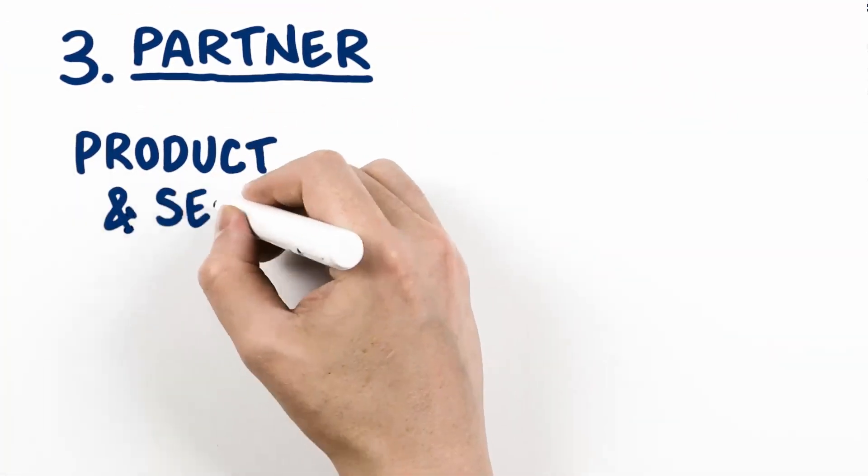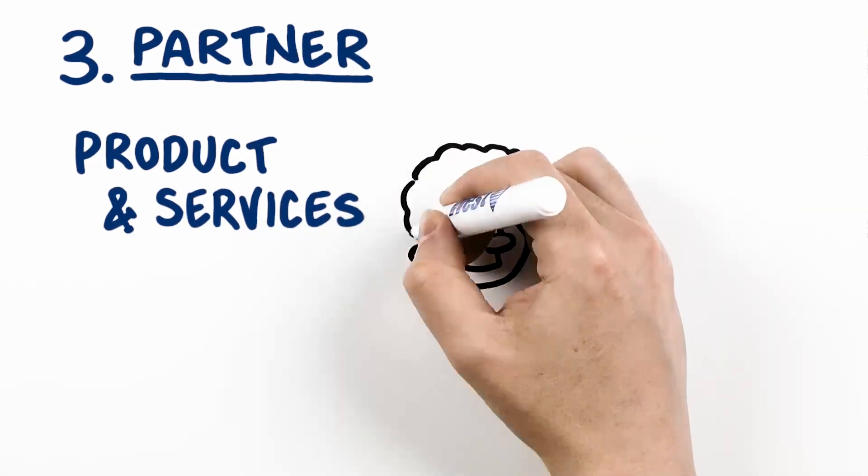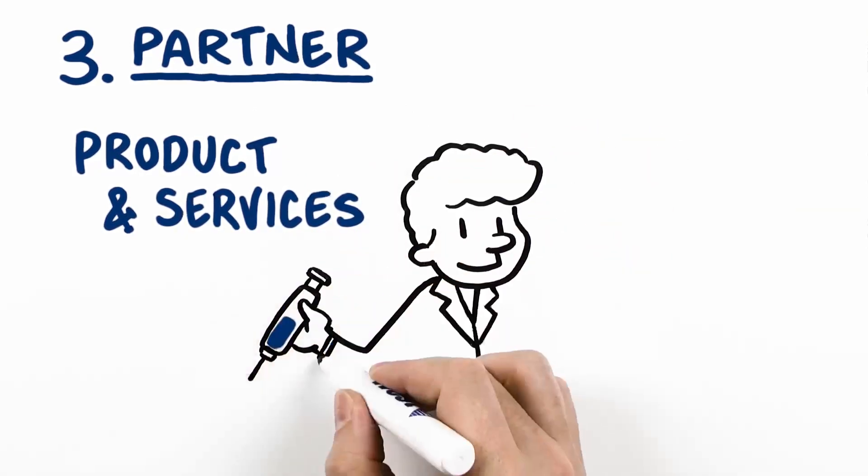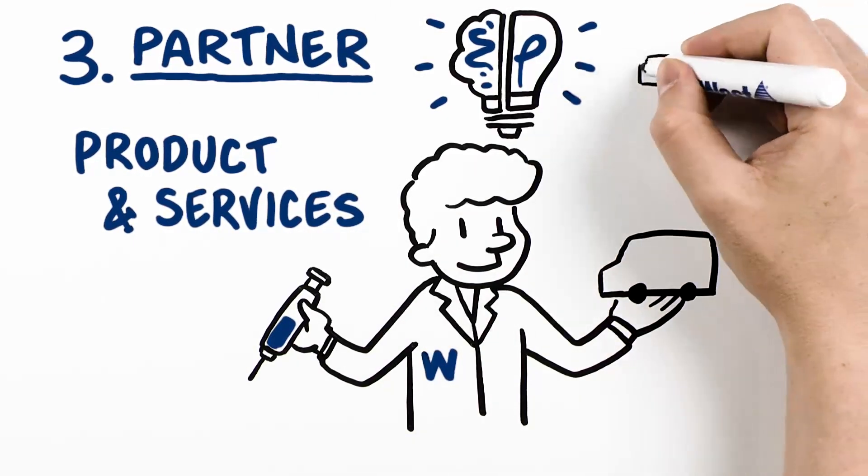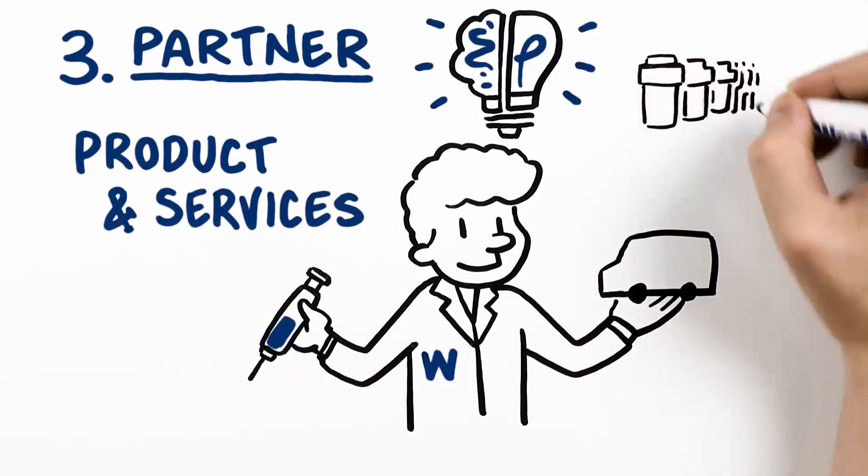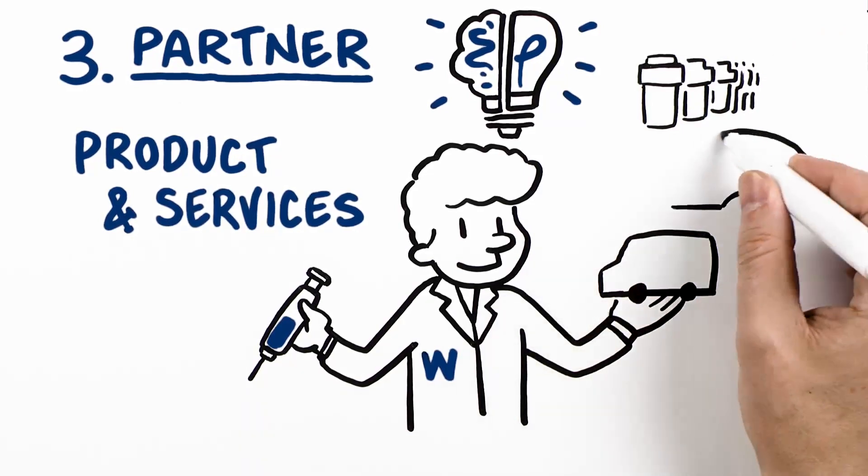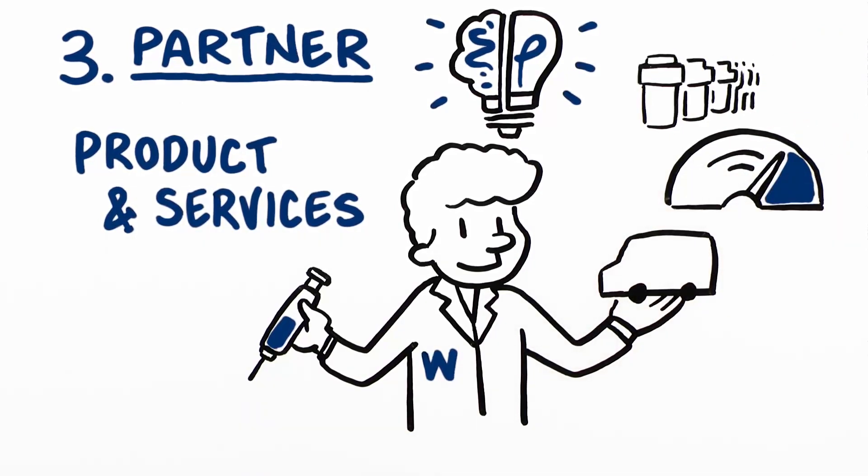Partner. Rely on a partner with both combination product and services experience to consolidate your supply chain. Fewer partners mean fewer silos, improved knowledge transfer and scalability across your product's lifecycle, and faster root cause analysis and resolution if an issue arises.